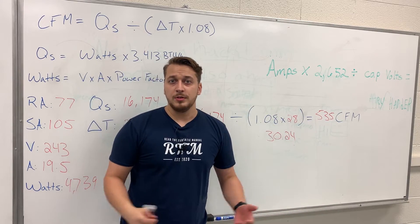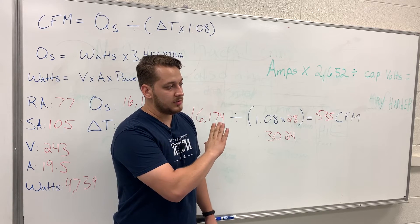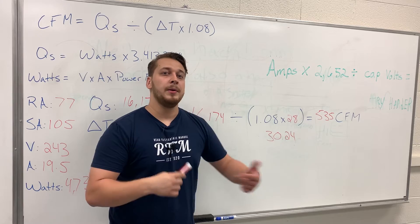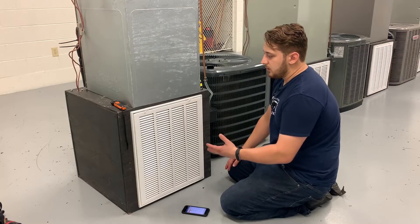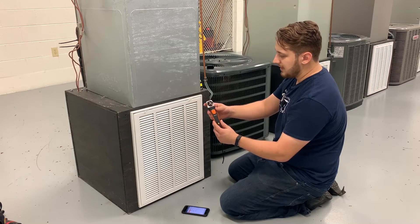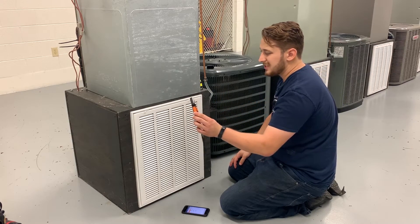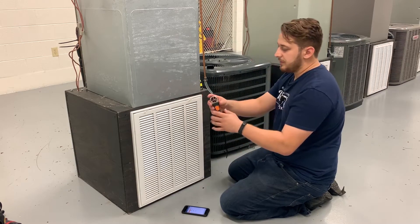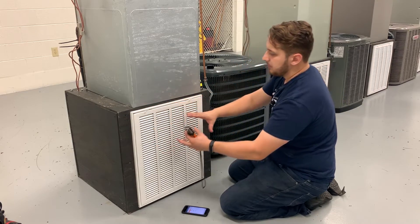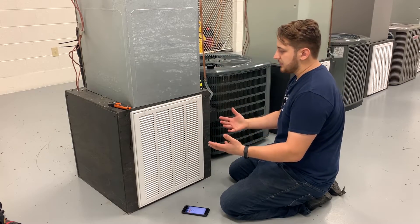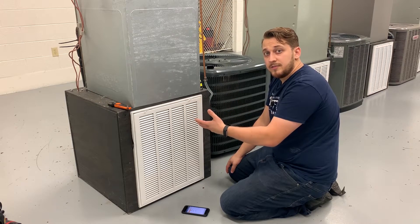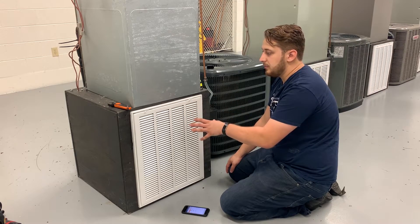Now we're going to traverse the return grill with a rotating vane anemometer and compare results. We're using the Testo 410i Bluetooth small vane anemometer. The larger the vane, the more accurate the reading, because it covers more surface area at one time. This exercise demonstrates how you'd use this method to solve for CFM.